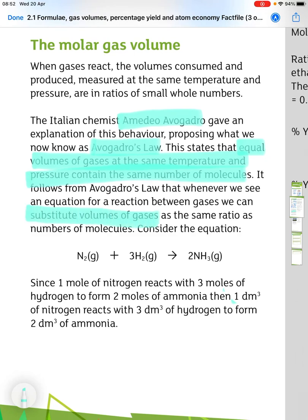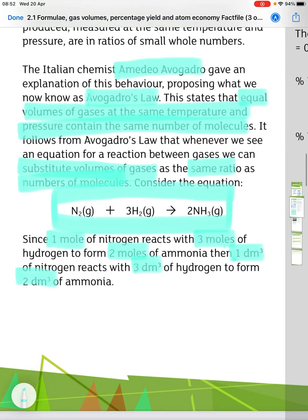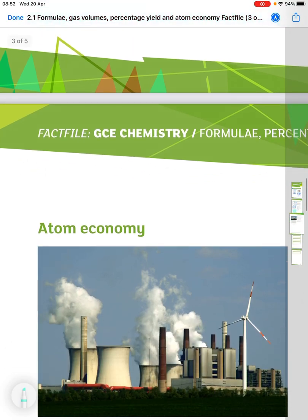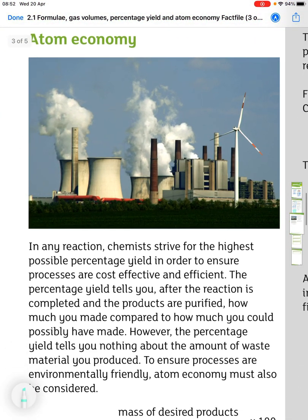It follows from Avogadro's Law that whenever we see an equation for a reaction between gases, we can substitute volumes of gases as the same ratio as numbers of molecules. So if we consider the equation N₂ plus 3H₂ gives us 2NH₃, which is formation of ammonia, since one mole of nitrogen reacts with three moles of hydrogen to form two moles of ammonia, then one dm³ of nitrogen reacts with three dm³ of hydrogen to form two dm³ of ammonia.